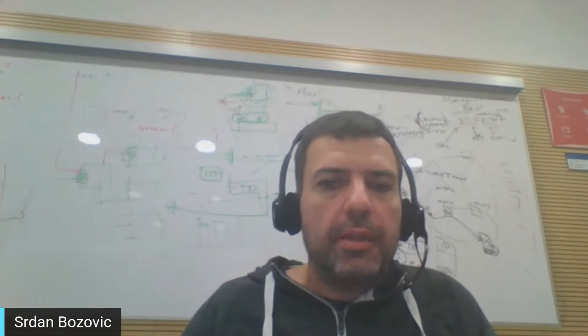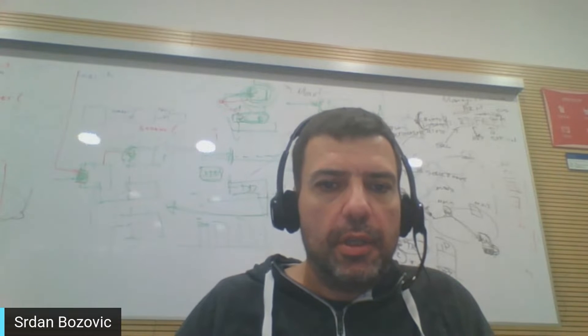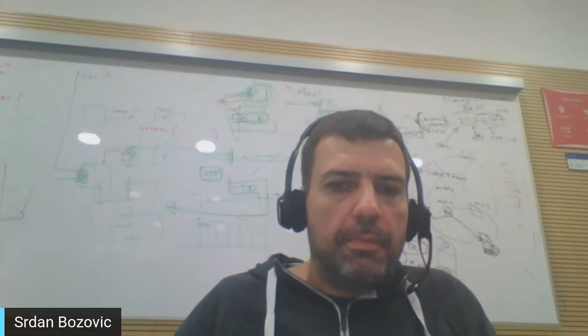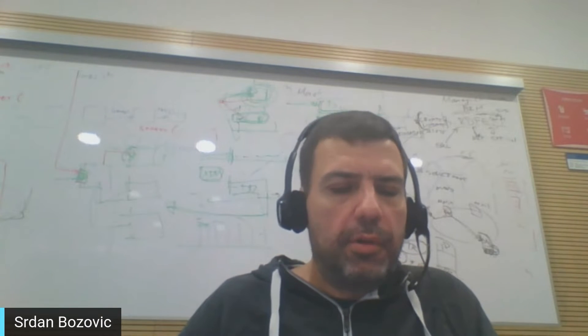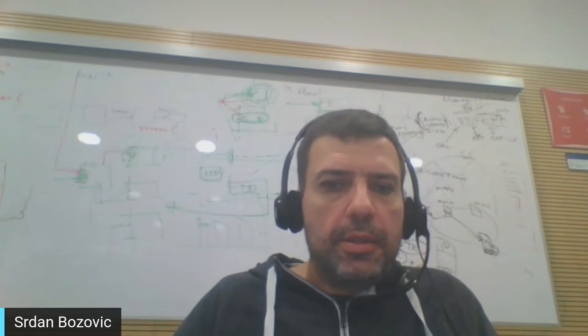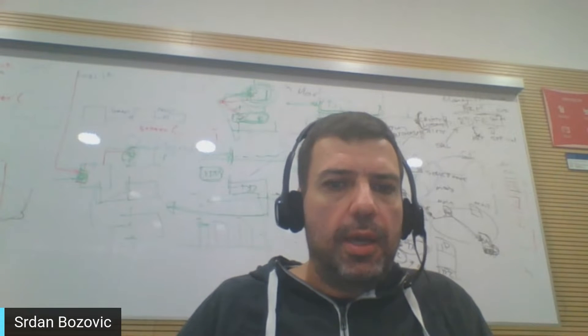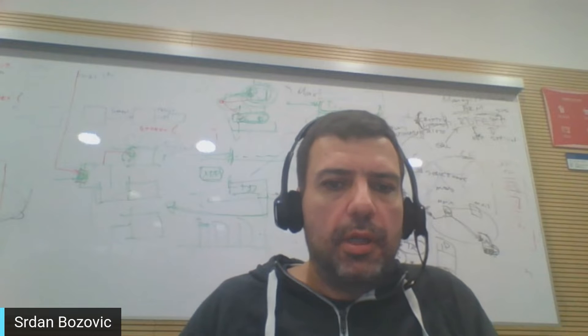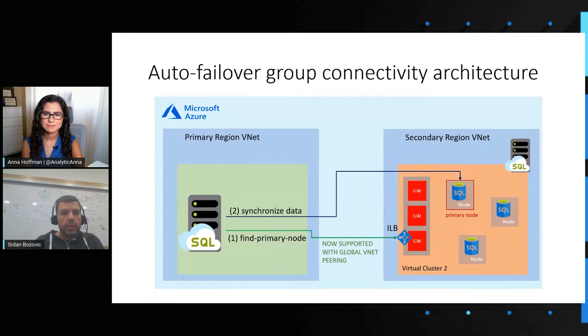Most of our enterprise customers need to set up a business continuity disaster recovery scenario. This scenario means that they have set up another managed instance in another region, so if there are some issues in the first region, they could failover. In order to set up something like that, you need a way to really connect these two regions. Global VNet Peering is really the best way to do that.